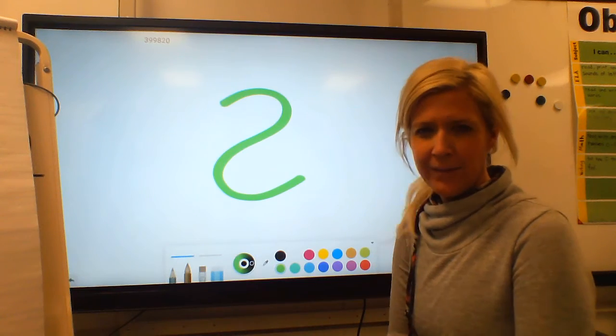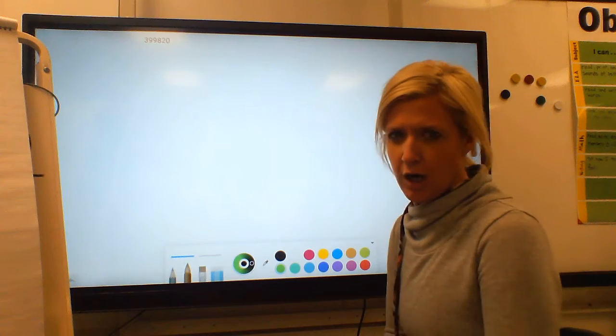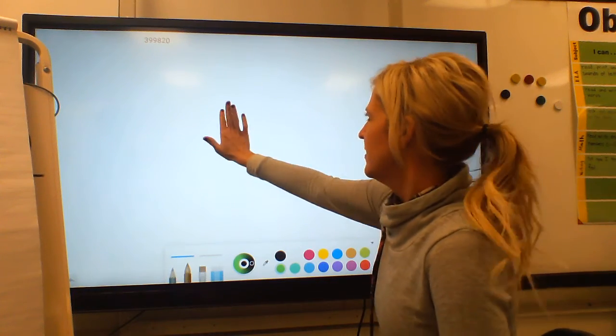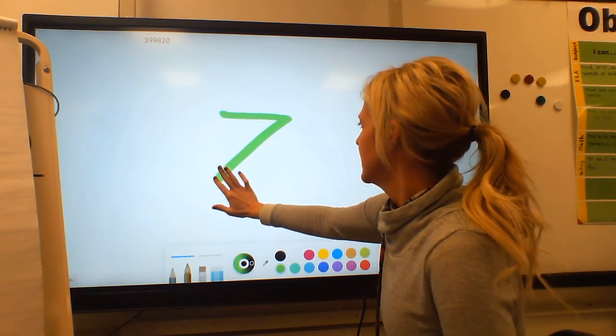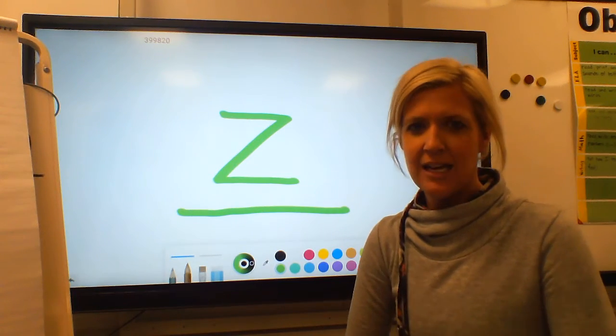Last time. Is this a Z? Oh, my goodness. No. That is a backwards S. We want to make sure our Z is very sharp and pointy. Here we go. Z says zzz. Awesome.